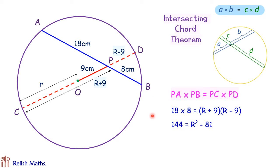18 times 8 is 144 equals R square minus 81. We'll take 81 on the other side.